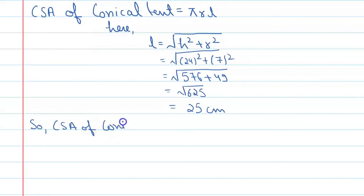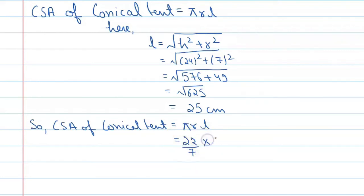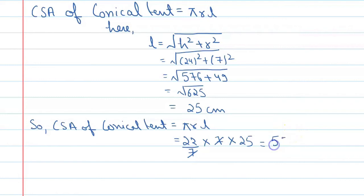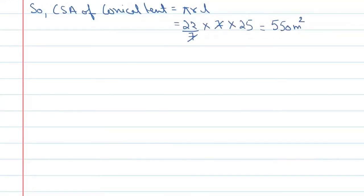The curved surface area of the conical tent equals πrl. Substituting the values: 22/7 × r=7 × l=25. Cancelling 7 with 7, we get 22 × 25 = 550. So the curved surface area of the conical tent is 550 m². The units are in meters.